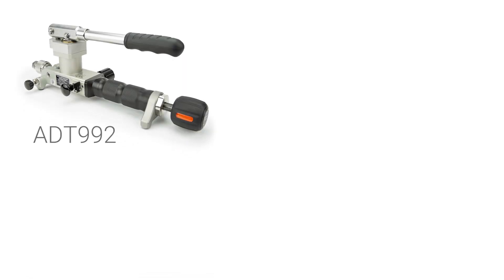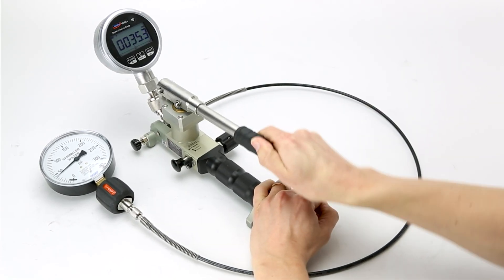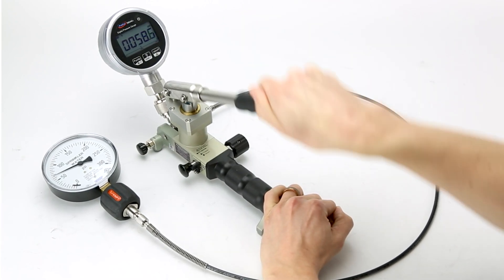The Aditel 992, 993, and 997 pressure pumps are designed to set a new standard in on-site calibration work by delivering exceptional performance with more efficiency than any other hand pumps on the market.